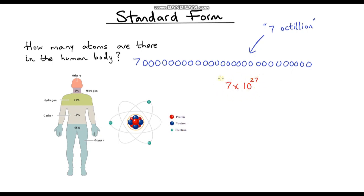With standard form, we always start with the base number, which has to be between 1 and 10. It can't equal 10 — it has to be less than 10. So we can say it's greater than or equal to 1 but less than 10, and then we always multiply by 10 a certain number of times. You can see that if we had a number with 2,000 zeros, the way we write it doesn't get any bigger — the power just says 2,000. So it's a nice short way of writing really big numbers, or really really small numbers, but we'll come on to that in another video.